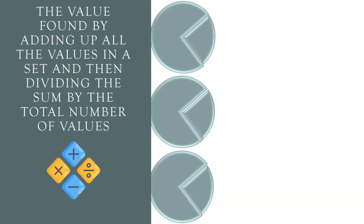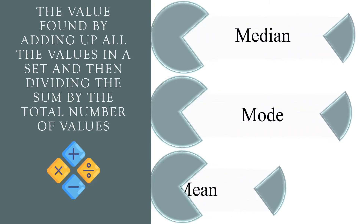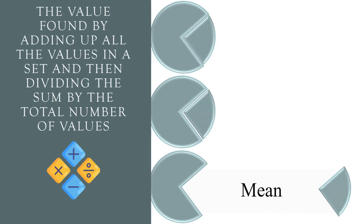The value found by adding up all the values in a set and then dividing the sum by the total number of values. Median, mode, or mean? The correct answer is mean.